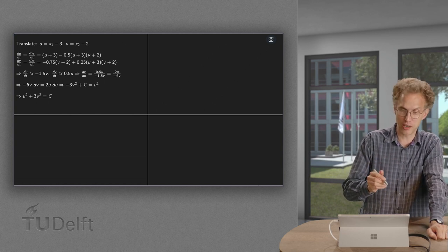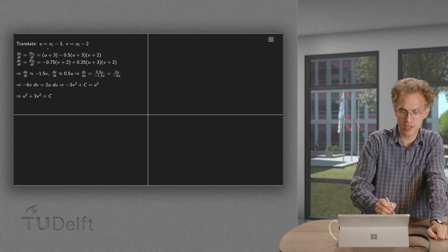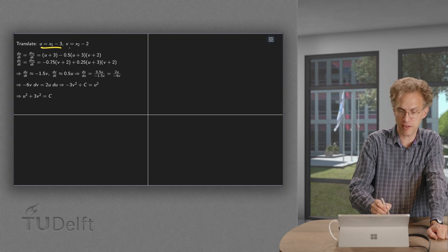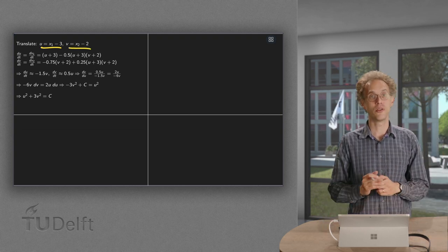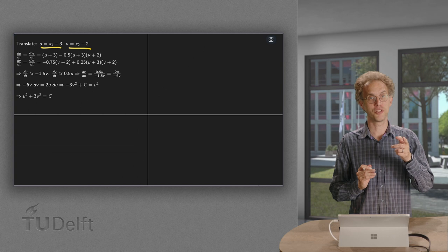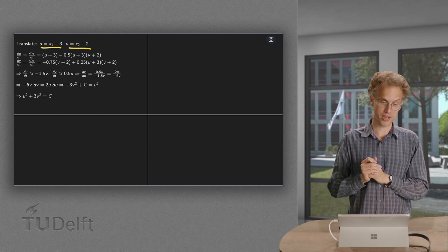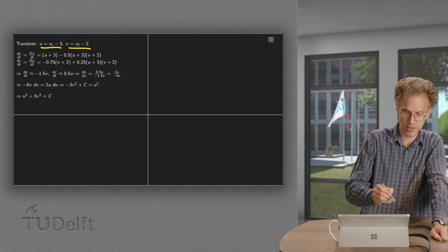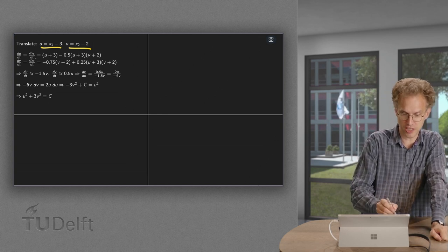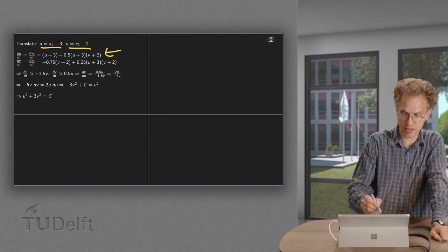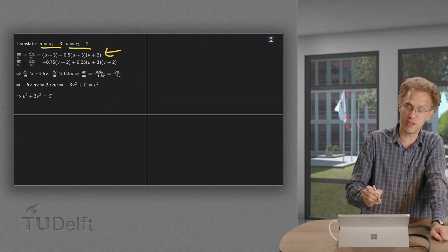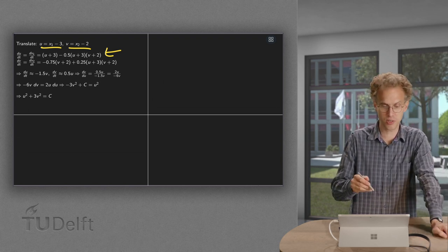For the idea, we take a look at the linear problem. We translate, setting u equals x1 minus 3 and v equals x2 minus 2. So now the point u equals 0 and v equals 0 corresponds to the equilibrium point (3, 2). Then we compute du/dt equals dx1/dt and we get this. And dv/dt is of course the same as dx2/dt and we get this.